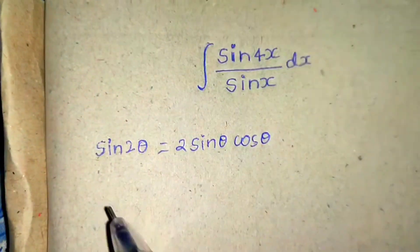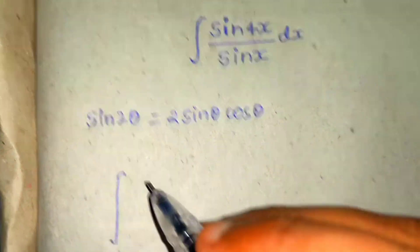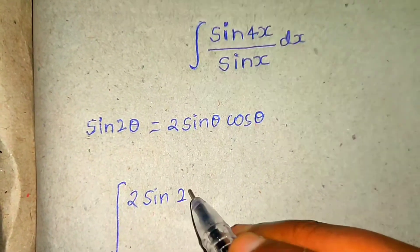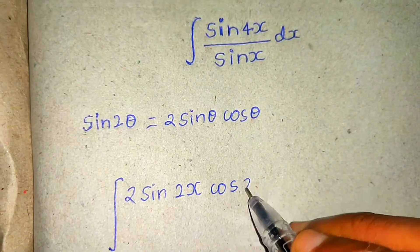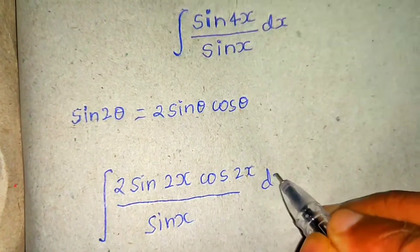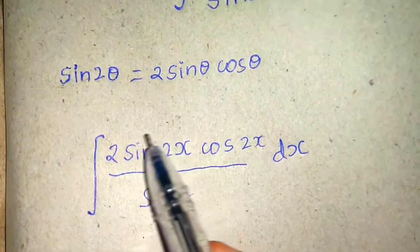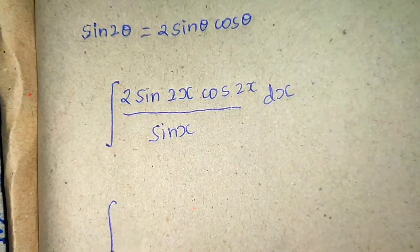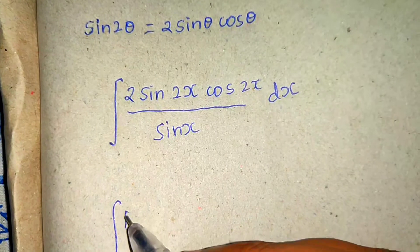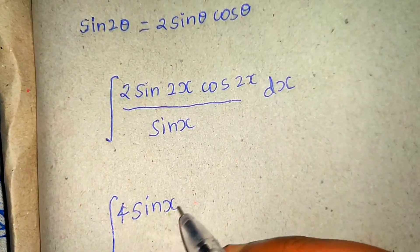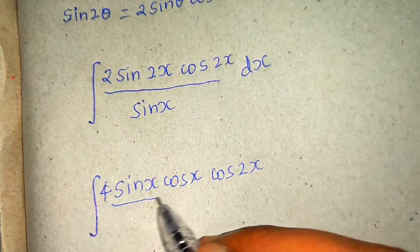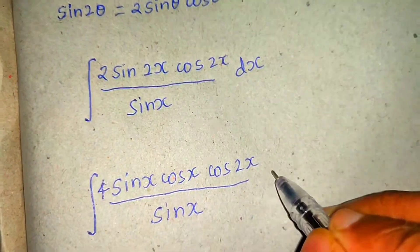If I break the numerator — because the denominator is not further breakable — the numerator can be written as 2·sin(x/2)·cos(x/2)... wait, using the formula on sin(2x): sin(2x) = 2sinx·cosx. So the numerator becomes 4·sinx·cosx·cos(2x), all divided by sinx.